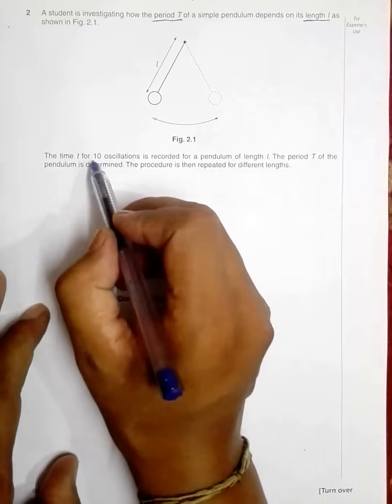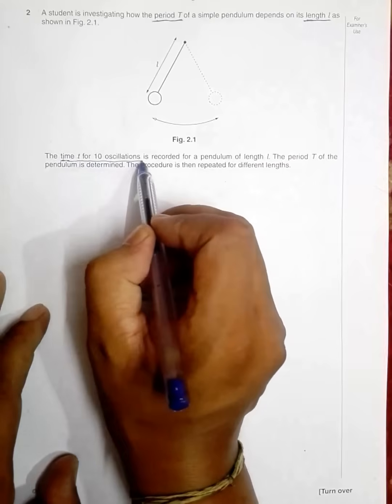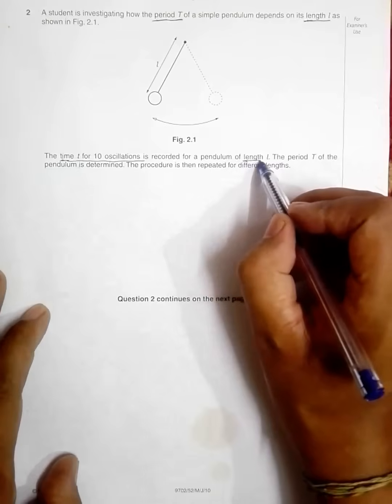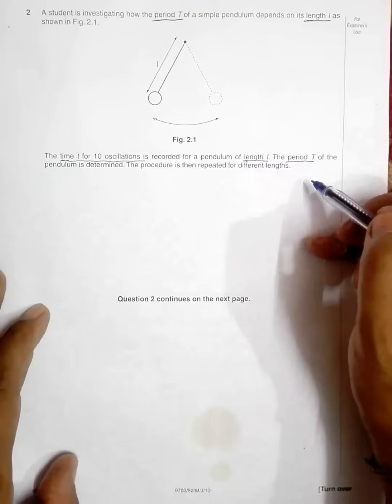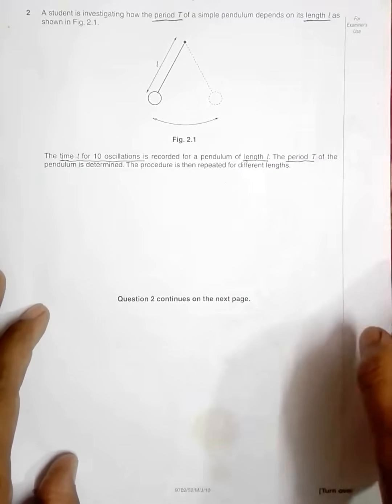The time t for 10 oscillations is measured for a pendulum of length L shown here. The period T of the pendulum is determined. The procedure is then repeated for different lengths. Not much issue in this. So now in the next phase what we have to do here is...